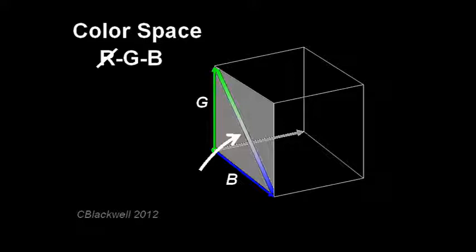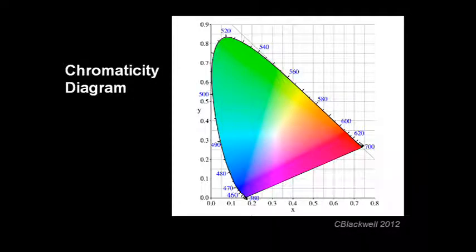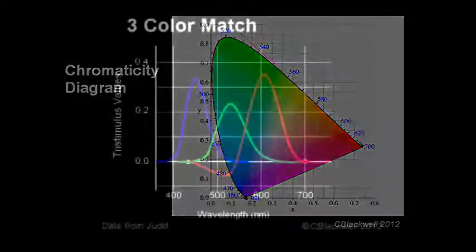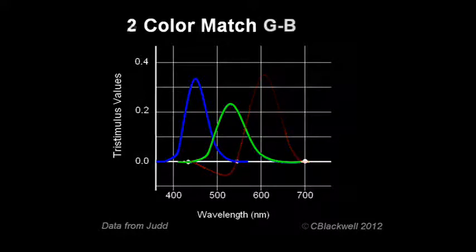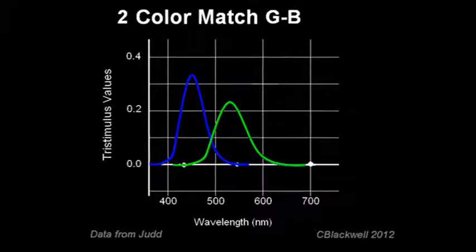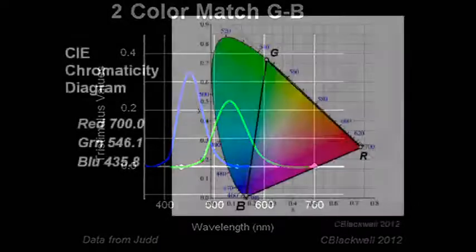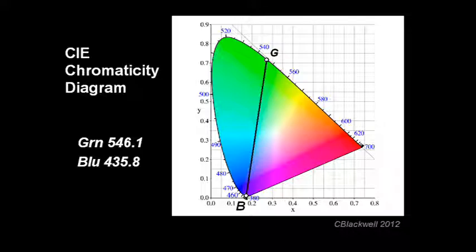Now let's cover the same thing from a different point of view on the chromaticity diagram. Color vision only looks like this if there are three dimensions. The chromaticity diagram came from color-matching data, starting with the red, green, and blue color-matching values. If the red receptor is not functioning, color-matching can still be done. The red-deficient person still makes matches, but not the same matches as a fully-functioning trichromat. Here is the chromaticity diagram with the three primaries. The person without red is matching every color with their two cone primaries, green and blue.